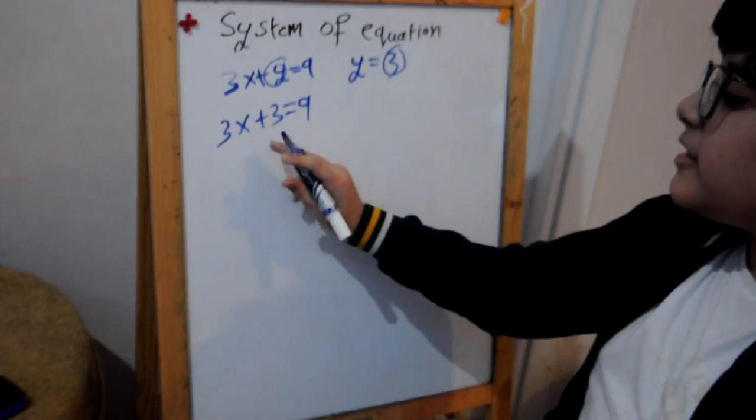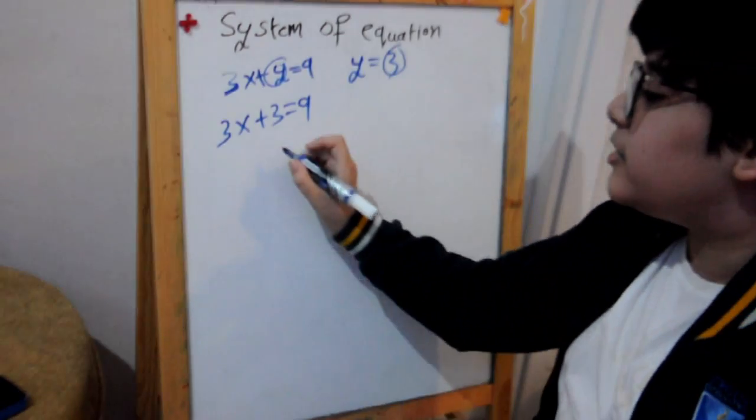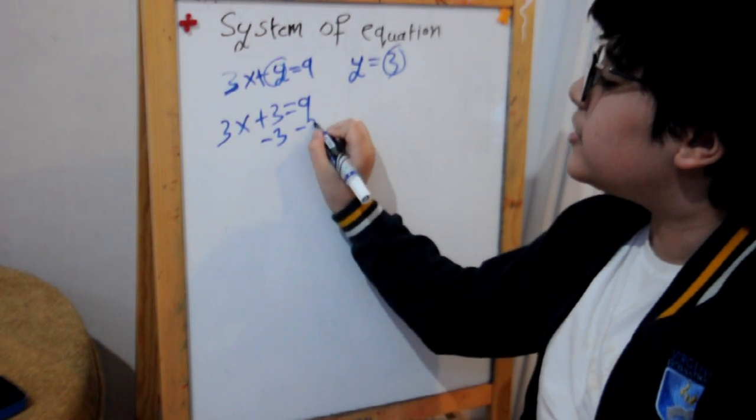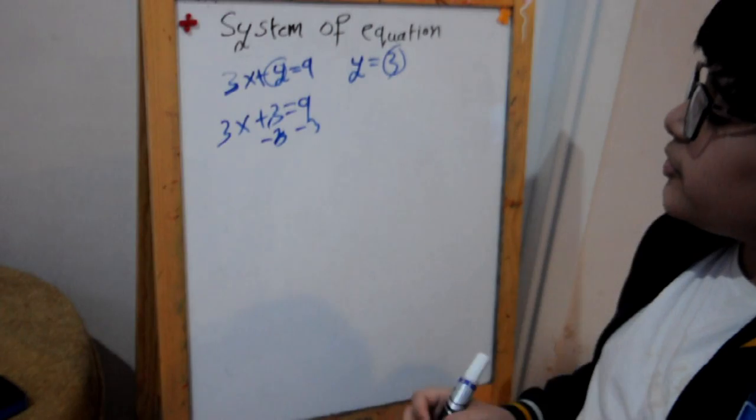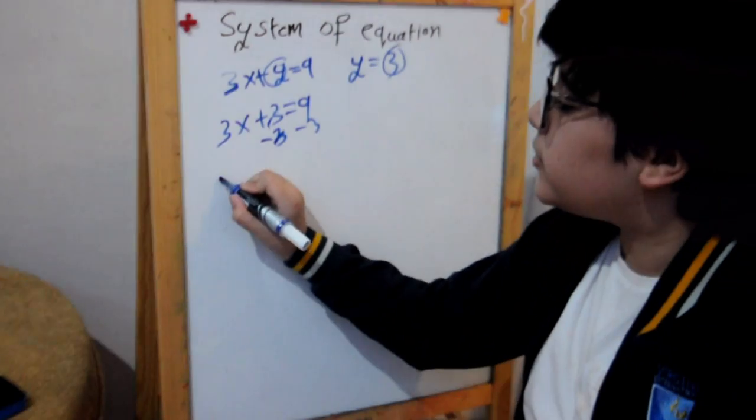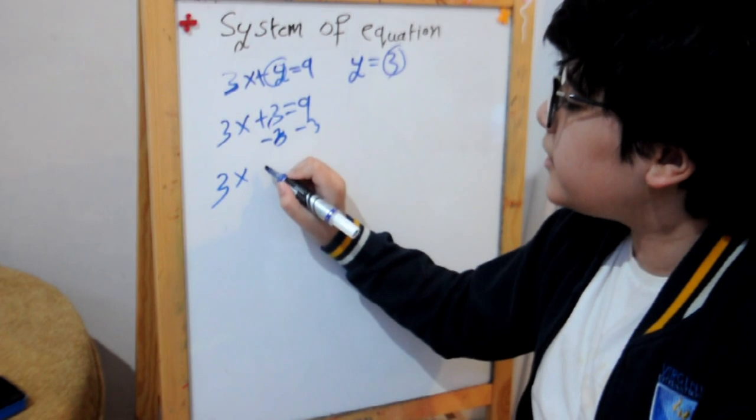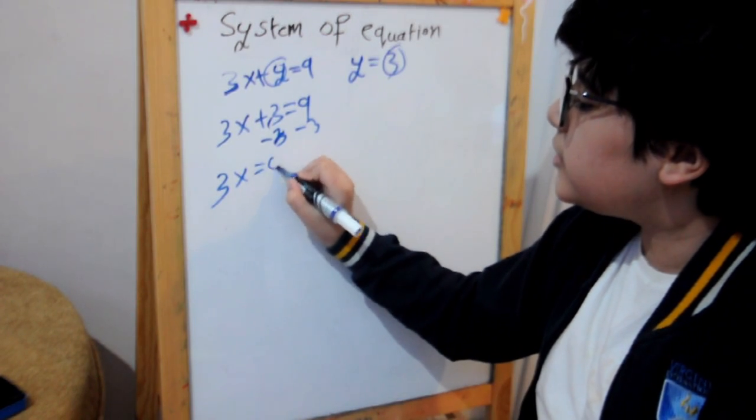So minus 3 and minus 3. So 3 will go with 3. And then this will equal to 3x equals 6.